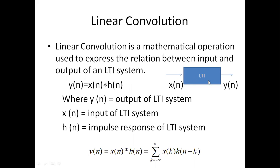An LTI system is a linear time invariant system. This system has an input x(n) and the output is y(n). The output y(n) is nothing but x(n) convolved with h(n), where h(n) is the impulse response of the LTI system and x(n) is the input.